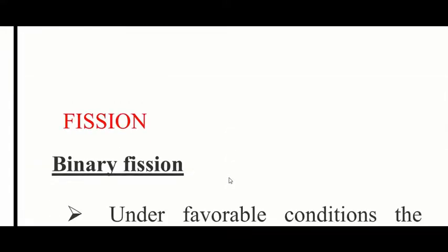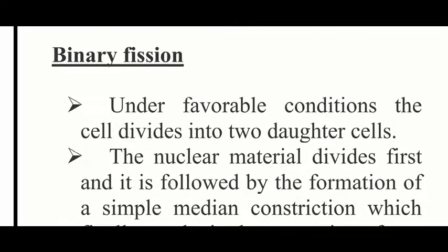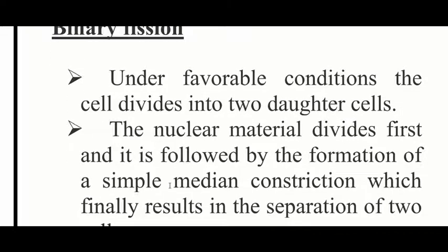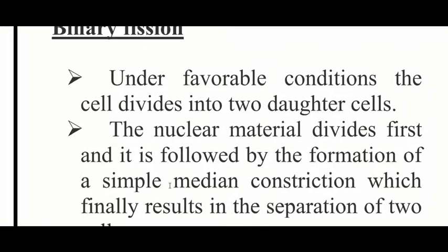First one: fission — binary fission. Under favourable conditions, the cell divides into two daughter cells. The nuclear material divides first, followed by the formation of a simple median constriction, which finally results in the separation of two cells. One cell divides into two daughter cells — this is binary fission.